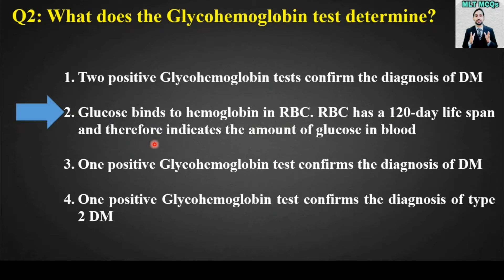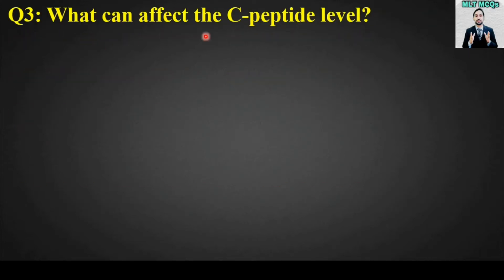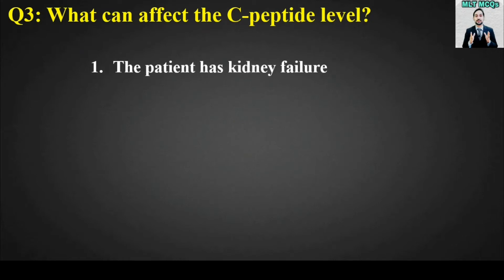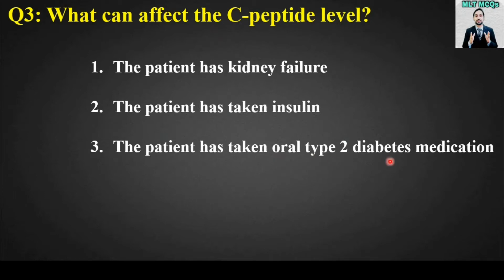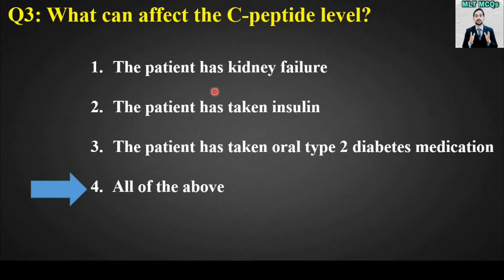MCQ number three: What can affect the C-peptide level? Options are: the patient has kidney failure, the patient has taken insulin, the patient has taken oral type 2 diabetes medication, or all of the above. The right answer is option number four — kidney failure, taking insulin, and taking oral type 2 diabetes medication all affect the C-peptide level.